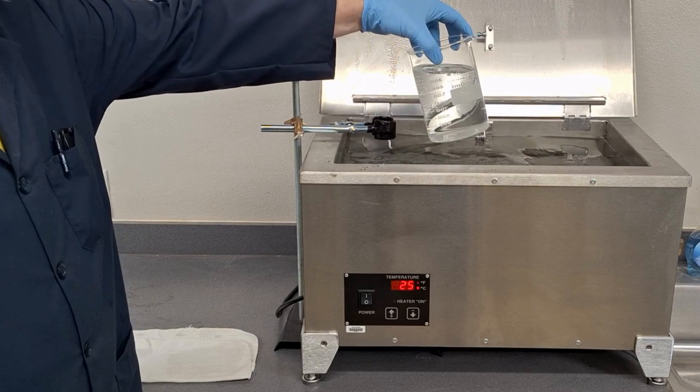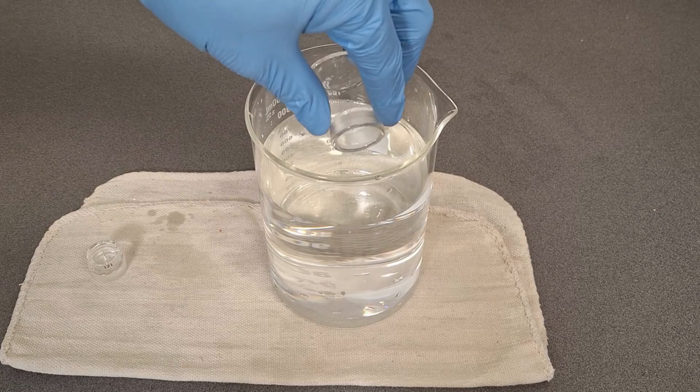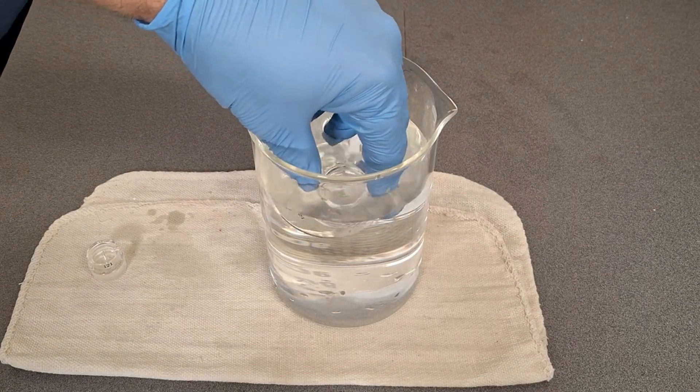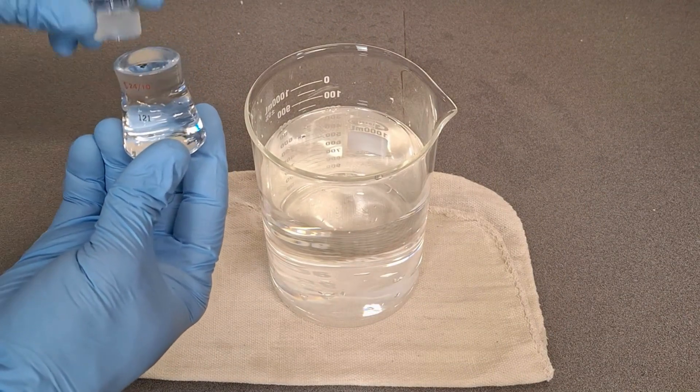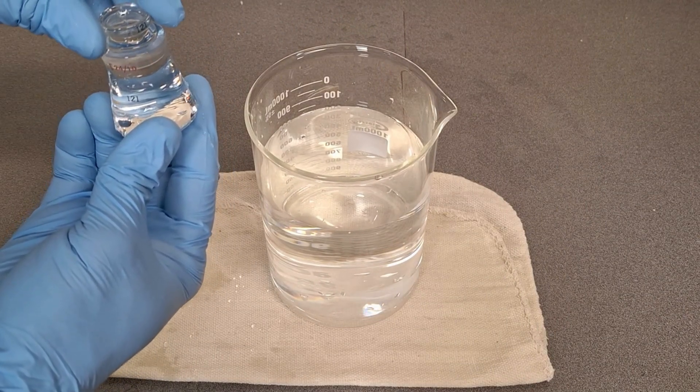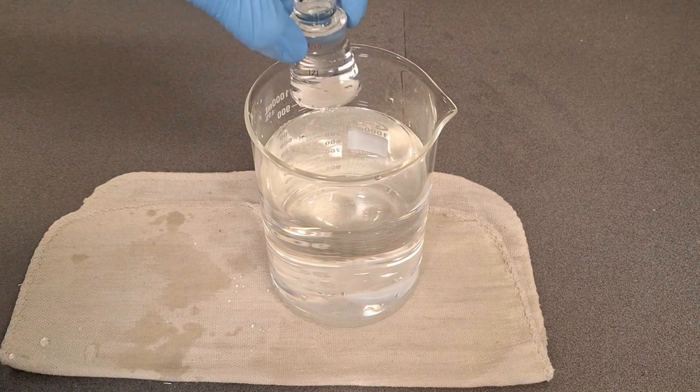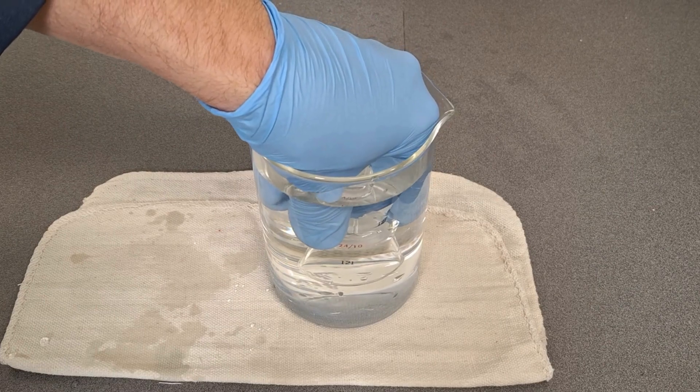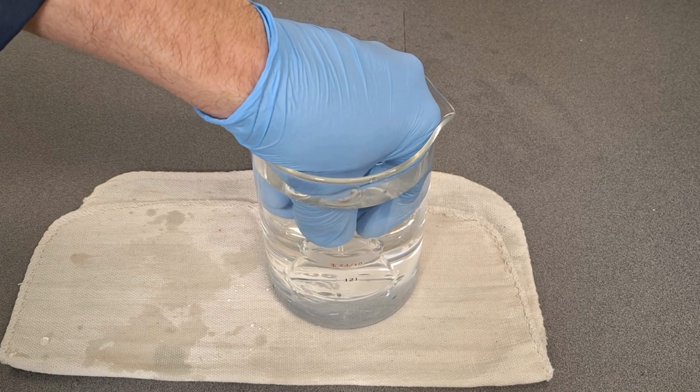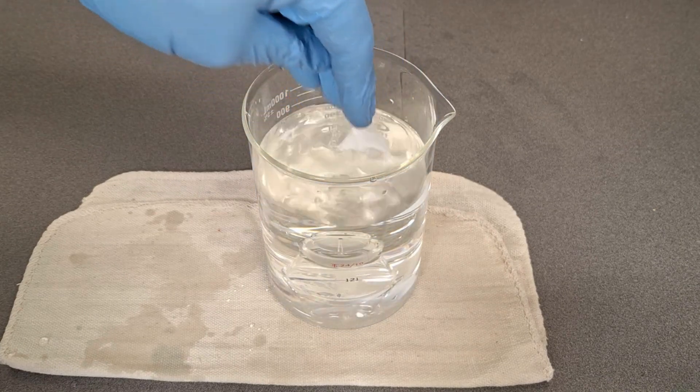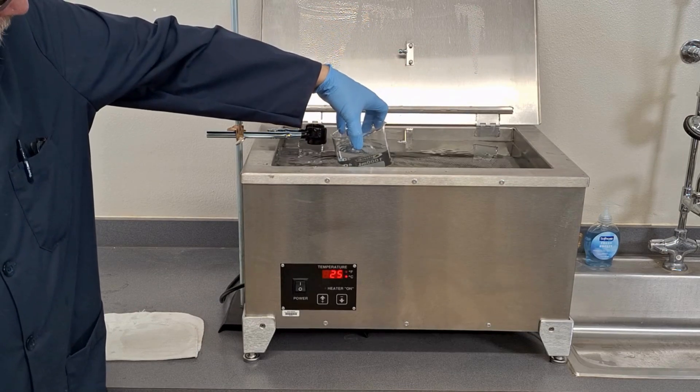Remove the beaker from the bath. Fill the pycnometer. Loosely place the stopper onto the pycnometer. Place the pycnometer into the beaker and gently but firmly press the stopper into place. Avoid trapping air bubbles in the pycnometer. Return the beaker to the water bath for at least 30 minutes.